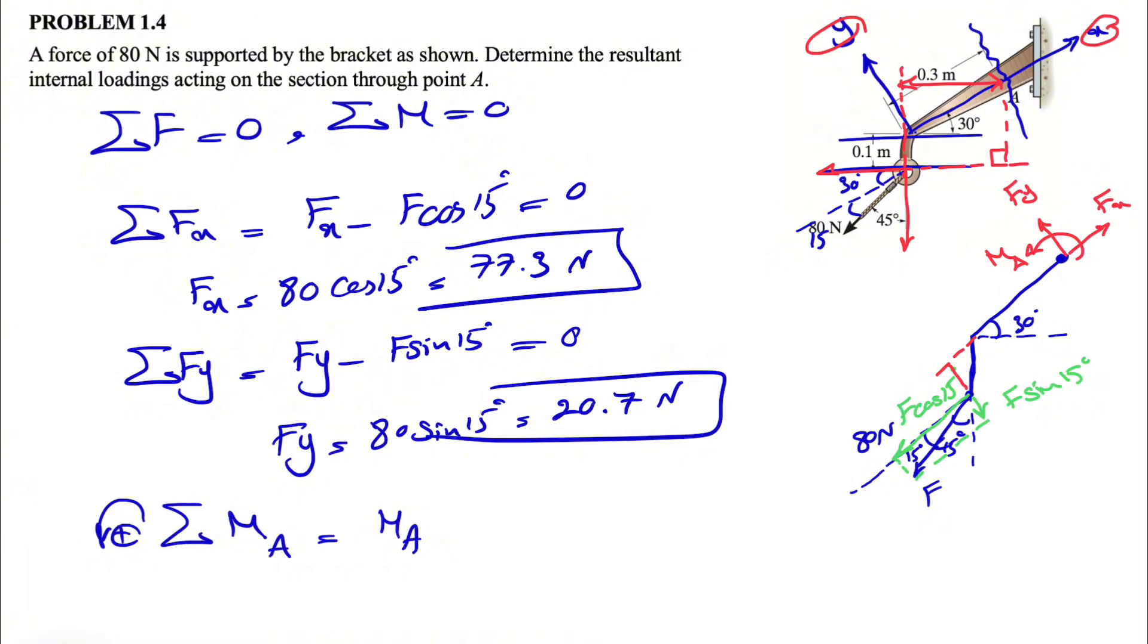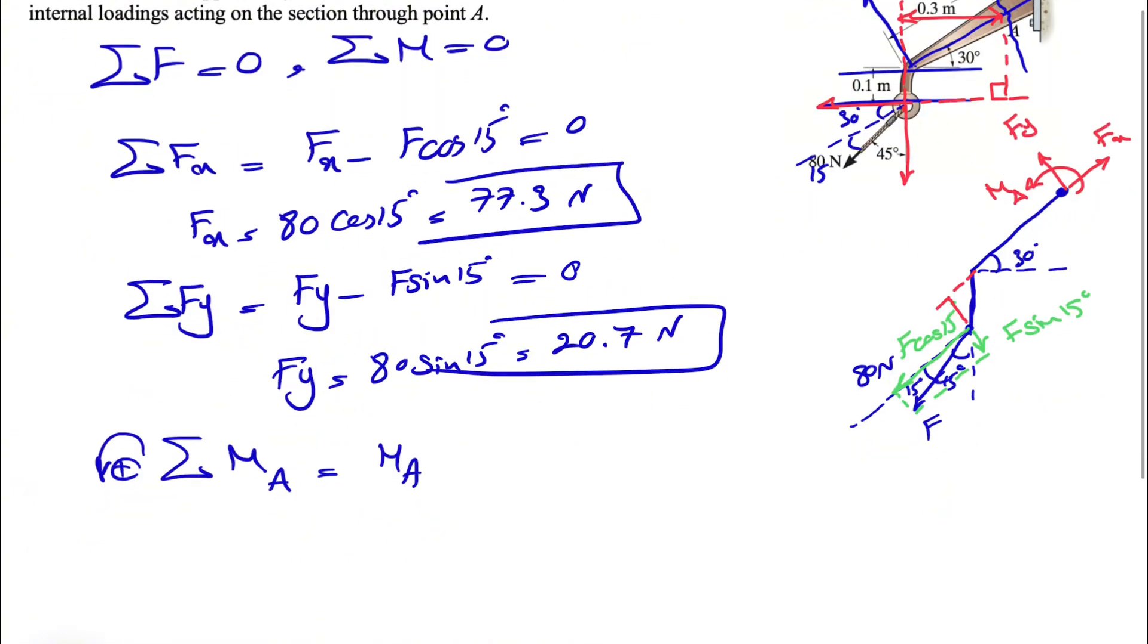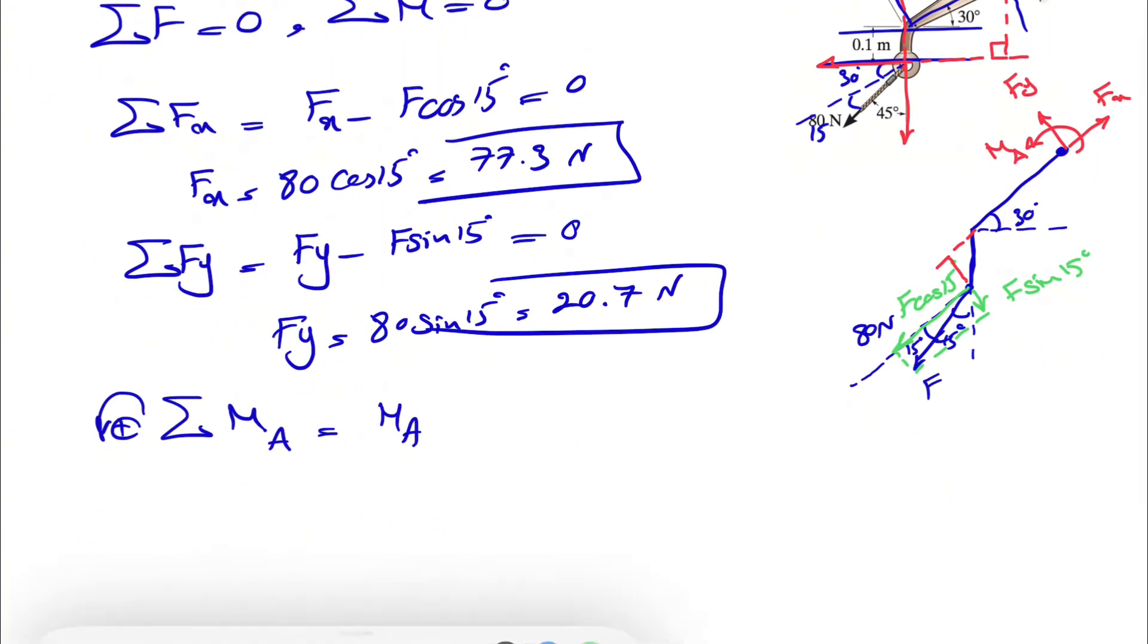If we go with what we consider as our X and Y here, like if we go with the green components, first of all we have to figure out we know this part is 0.1 meter. If we want to figure that angle here, this angle would be same as this angle right here, which is 90 minus 45 minus 15, which is going to be 30 degrees.